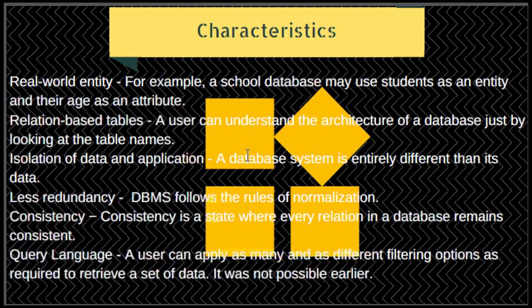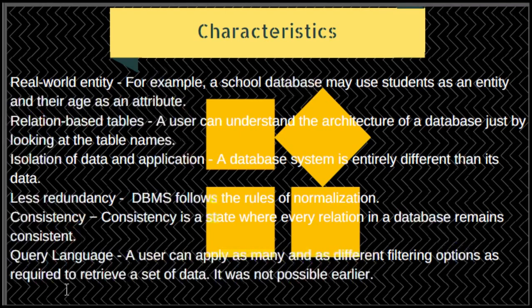The third characteristic is isolation of data and application. A database system is entirely different from its data — a database is an active entity, whereas data is passive. DBMS also stores metadata, which is data about the data. Next is less redundancy: DBMS follows the rules of normalization, a mathematically rich and scientific process that reduces data redundancy by splitting a relation when any attribute has redundant values.